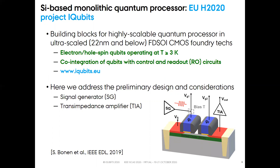The basic system considered in iQubits comprises an FDSOI CMOS double quantum dot to host the qubits. A signal generator provides the signal needed to manipulate the spin state of the qubit, and a transimpedance amplifier amplifies the small tunneling currents which are produced in order to read out the spin state of the qubit. In this work, we addressed the preliminary design considerations for the signal generator and the transimpedance amplifier.